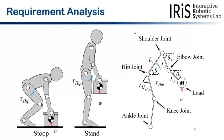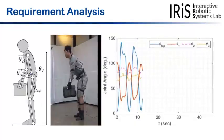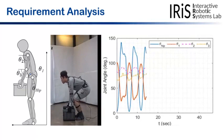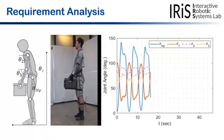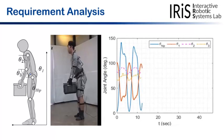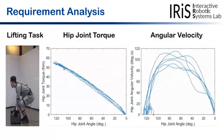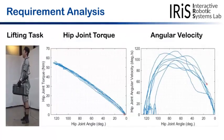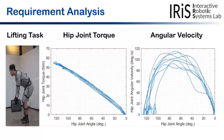For this, a simplified body model was used to calculate the additional torque required for the hip joint when lifting a 10 kg load. To calculate the required hip joint torque, we performed experiments and recorded the joint angle values during lifting the object. So we got required hip joint torque and angular velocity during lifting a 10 kg load from stoop stand position.